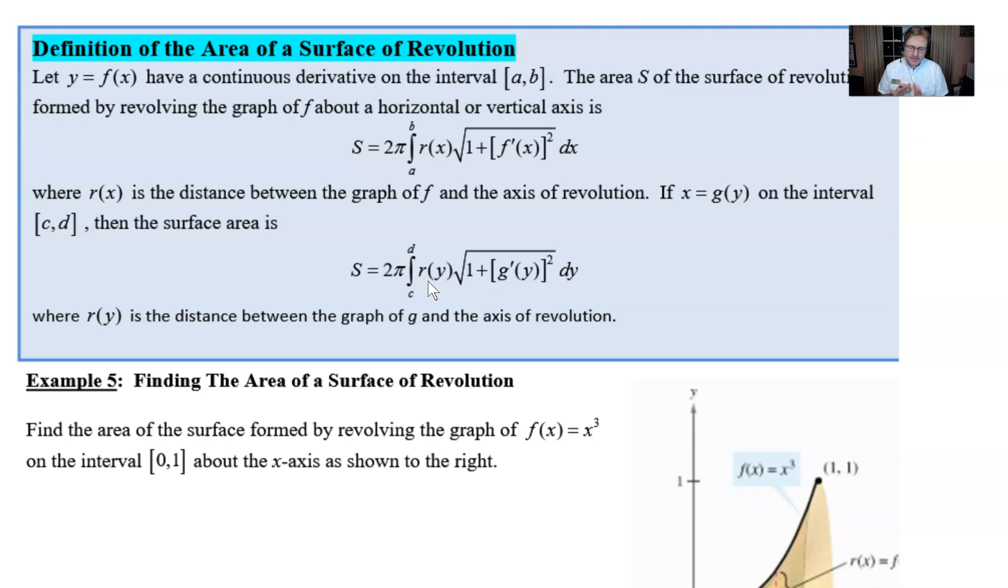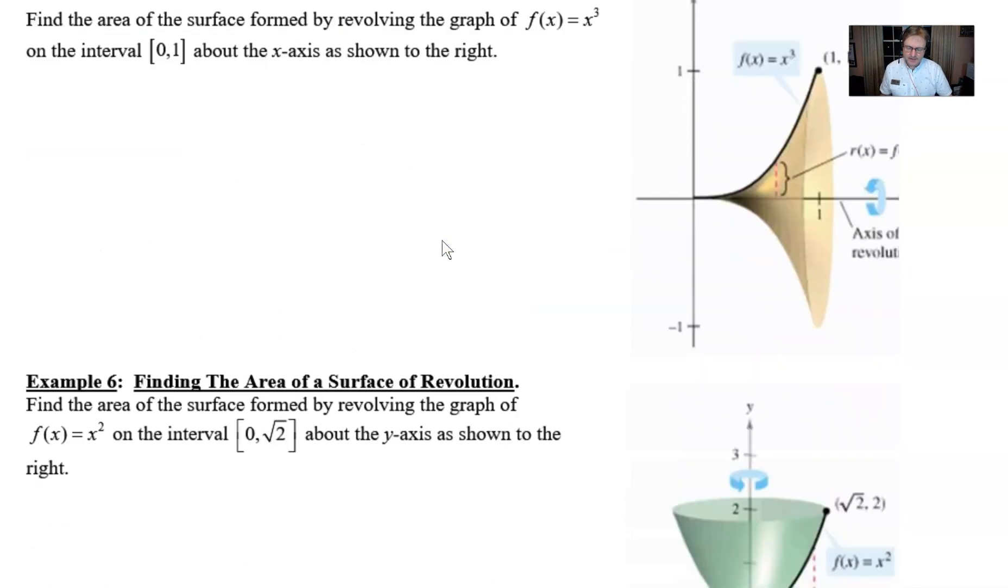And that's what's very important, especially in this particular example that you're about to see. Because what is kind of sometimes a misconception is that you can revolve around a vertical axis to find this surface area of revolution, and still use x as your independent variable. You can integrate with respect to x, although it's a vertical axis of revolution.